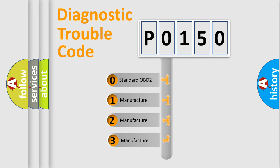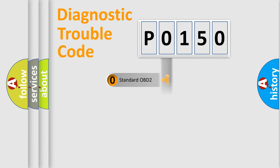If the second character is expressed as zero, it is a standardized error. In the case of numbers one, two, three, it is a more prestigious expression of the car specific error.